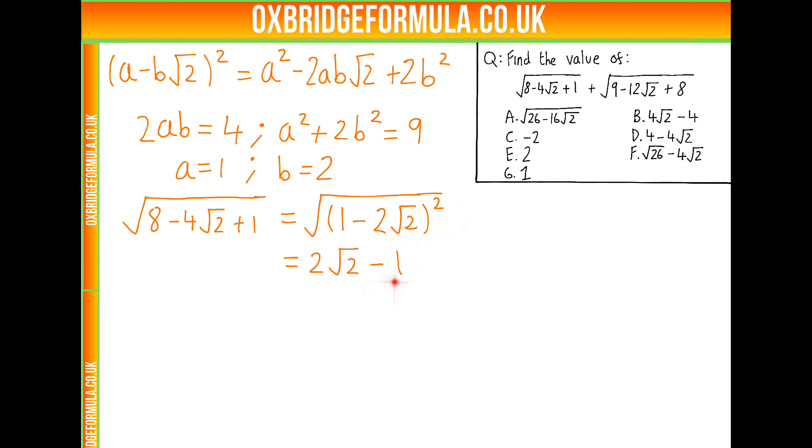And now, this is 2 root 2 minus 1. Why is that? Well, the reason we've switched the sign on this is 1 minus 2 root 2 is negative, and we're taking a positive root here. So we need the modulus of this, which is 2 root 2 minus 1.